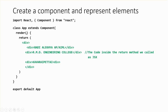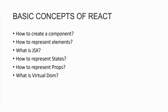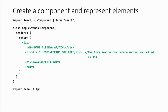You have to write a render function, and inside the render function we are going to write a return method. What the return method does is — inside it we are going to write the representation of code, which looks like HTML code on the browser. The code you write inside this return method is called JSX. So whatever statements you write inside the return method, we call it as JSX.